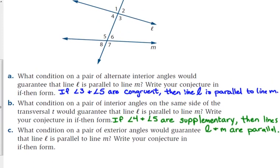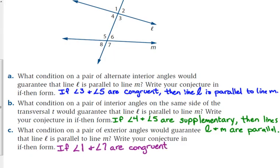Part C asks what condition on a pair of exterior angles guarantees that line L is parallel to line M. Let's go with angle 1 and angle 7 — they are alternate exterior angles. Alternate exterior angles are congruent. So if angle 1 and angle 7 are congruent, then lines L and M are parallel.